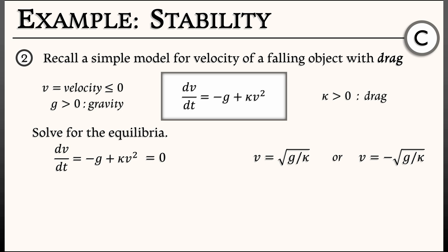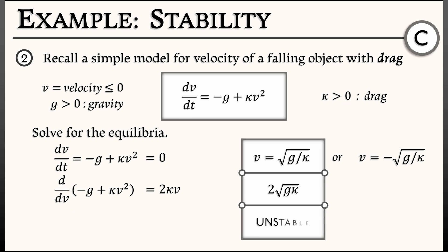These are our two equilibria. Now, I recall that in this model, we wanted to restrict the velocity to be non-positive. So we really only care about that negative root physically. But for the moment, let's just look at both of them and see what happens. How do we apply the stability criterion? We take the derivative of the right-hand side with respect to the state variable. That's v. There's no x in here. So the derivative with respect to v of negative g plus kappa v squared is simply 2 times kappa times v. If I evaluate that derivative at the positive equilibrium, I get 2 times square root of g times kappa. This is a positive number, and that means that this is an unstable equilibrium.